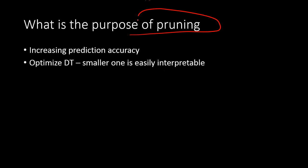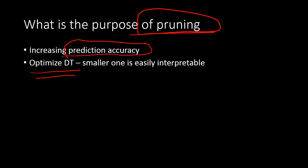If you're familiar with decision tree, you know what pruning is. A common interview question is: what is pruning and why do you use it when building decision tree models? The straightforward answer is that you use pruning in decision tree modeling to increase prediction accuracy of your model and also to optimize it. You can have a very big decision tree model, but that will not be efficient.